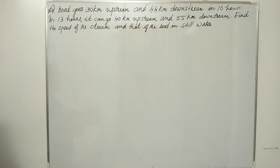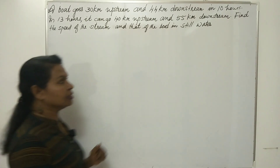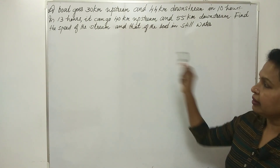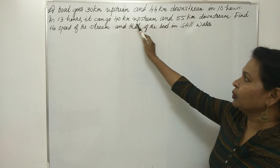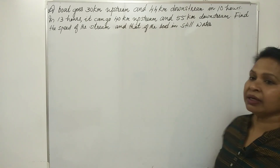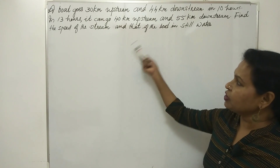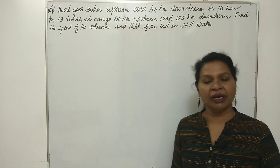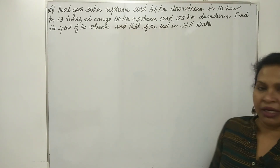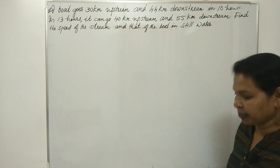A boat goes 30 km upstream and 44 km downstream in 10 hours. In 13 hours, it can go 40 km upstream and 55 km downstream. Find the speed of the stream and that of the boat in still water. That is the question.